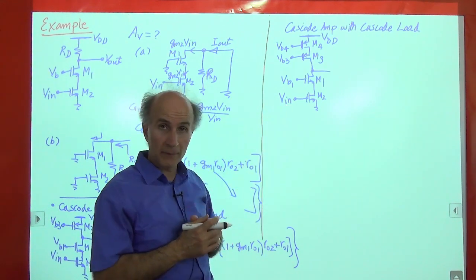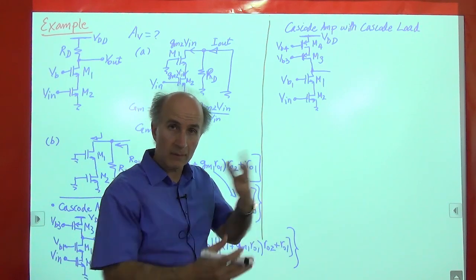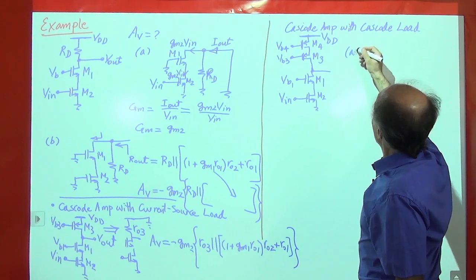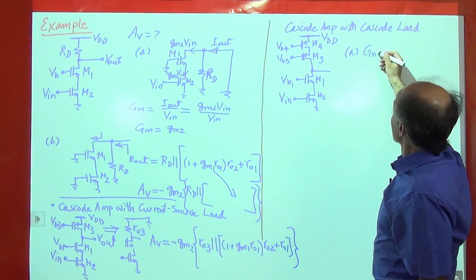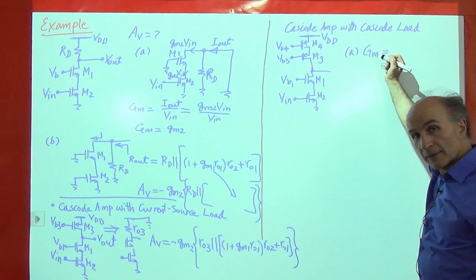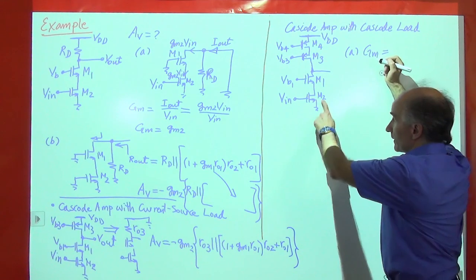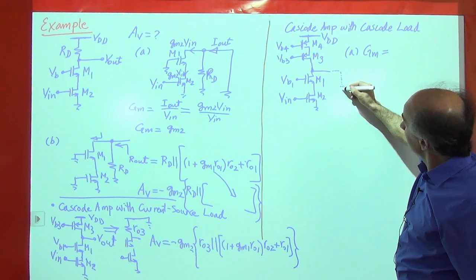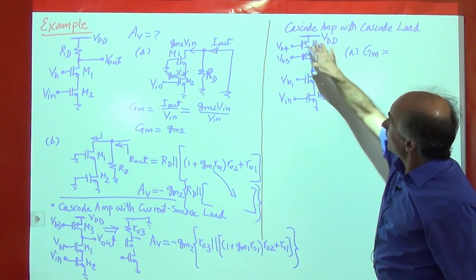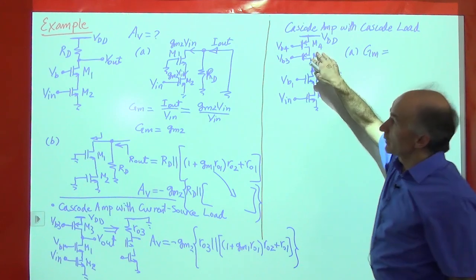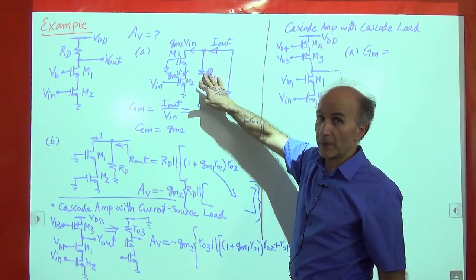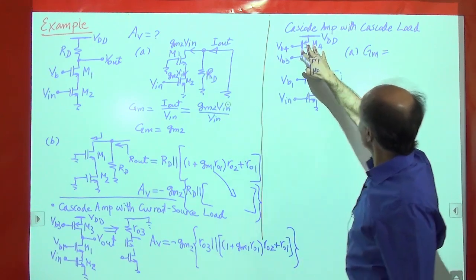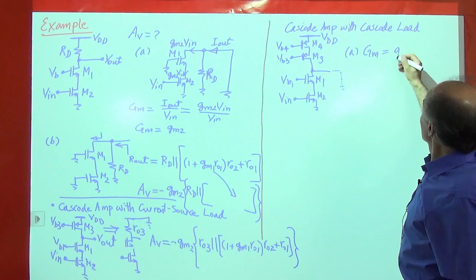Can we write the voltage gain without drawing the small signal model? Yes. For step A, transconductance: if we place a short circuit at the output, the PMOS cascode goes out of the picture, just as before. So the big GM is still equal to GM2.